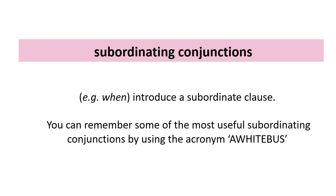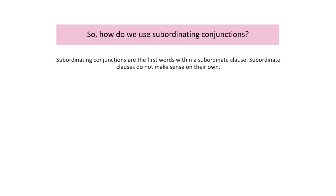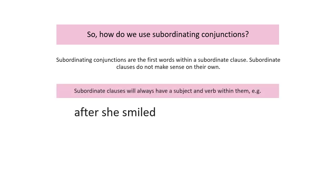Now let's move on to subordinate conjunctions. They introduce a subordinate clause. You can remember some of the most useful subordinate conjunctions with the acronym AWHITBUS — A, W, H, I, T, E, B, U, S — starting the words for each group. Subordinate conjunctions start a subordinate clause. Subordinate clauses do not make sense on their own, but they will always have a subject and a verb within them.